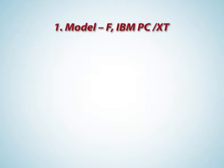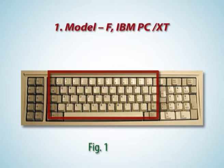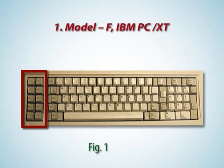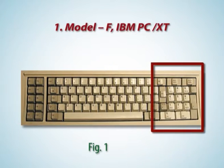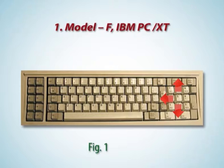One: Model F IBM PC XT keyboard. Figure 1 shows its image. It was an 83-key keyboard having standard alphanumeric keys, and was introduced in 1981. It had 10 function keys F1 to F10 grouped on the left side. There was a separate keypad on the right side that served dual purpose: it offered numeric keys 0 to 9, which was a great help to accountants, and could also be used as navigation keys for moving the cursor in up, down, left, and right directions.